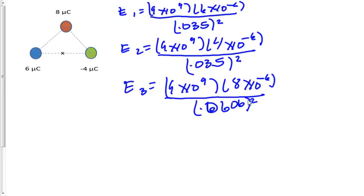And let's record all of the values for this. Electric field 1 is going to have a value of 4.4 times 10 to the 7th, and that's newtons per coulomb. Electric field 2 is going to have a value of 2.9 times 10 to the 7th newtons per coulomb.